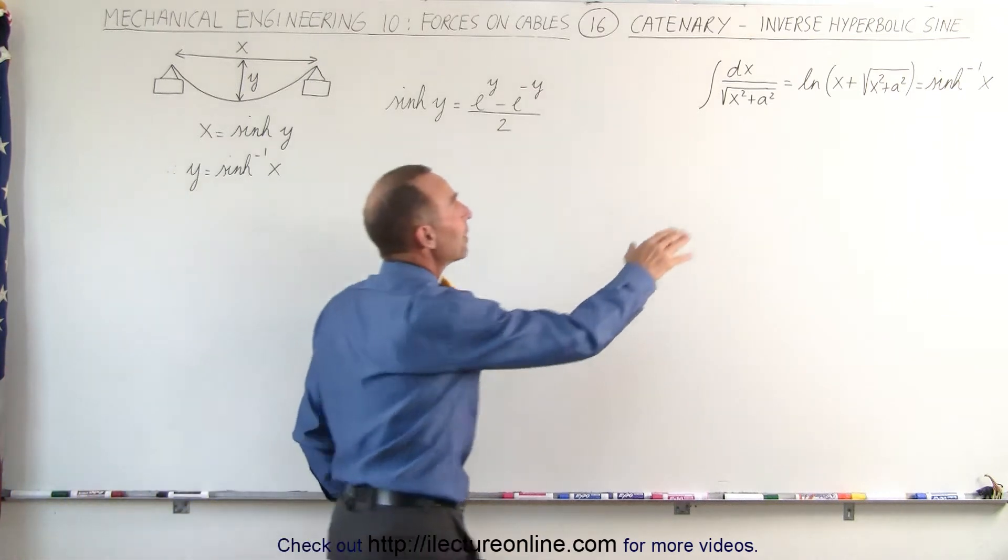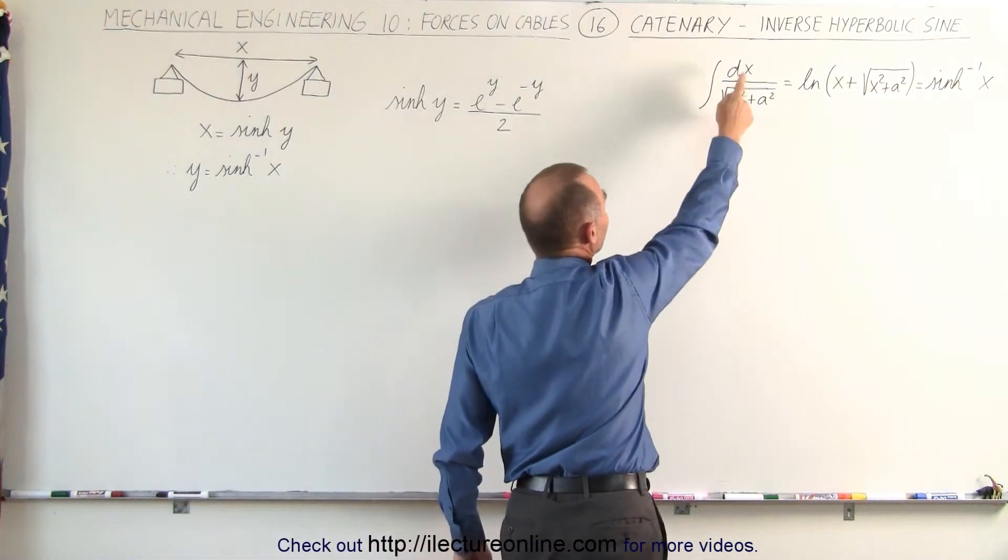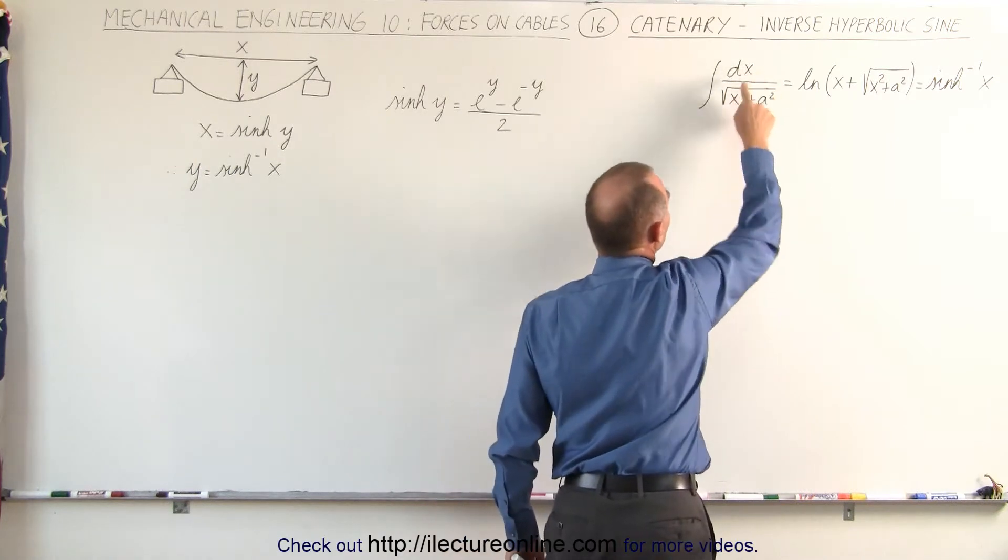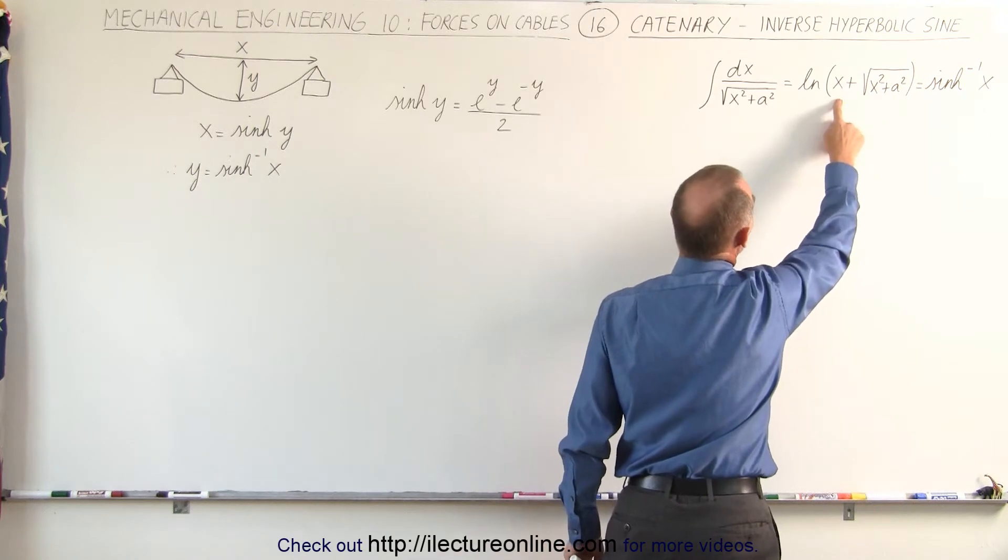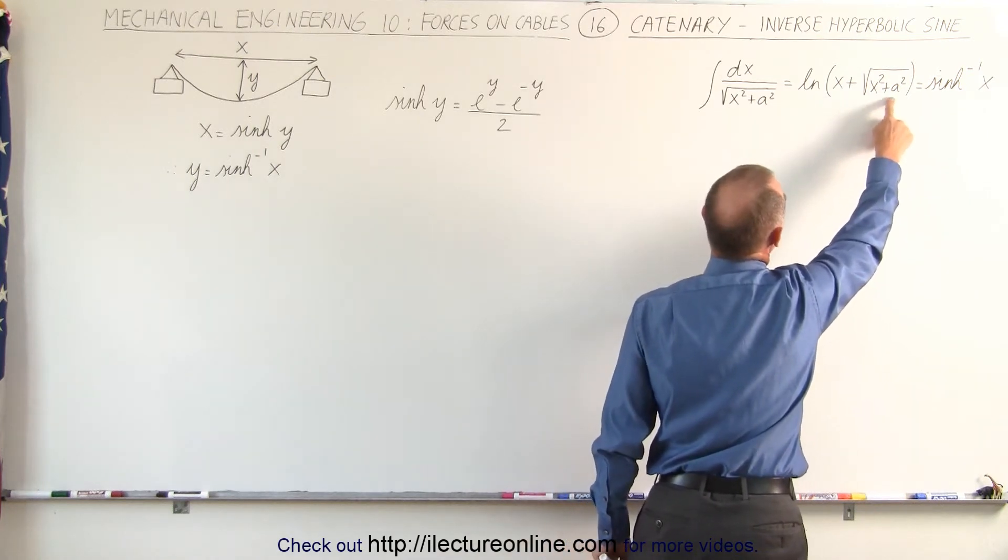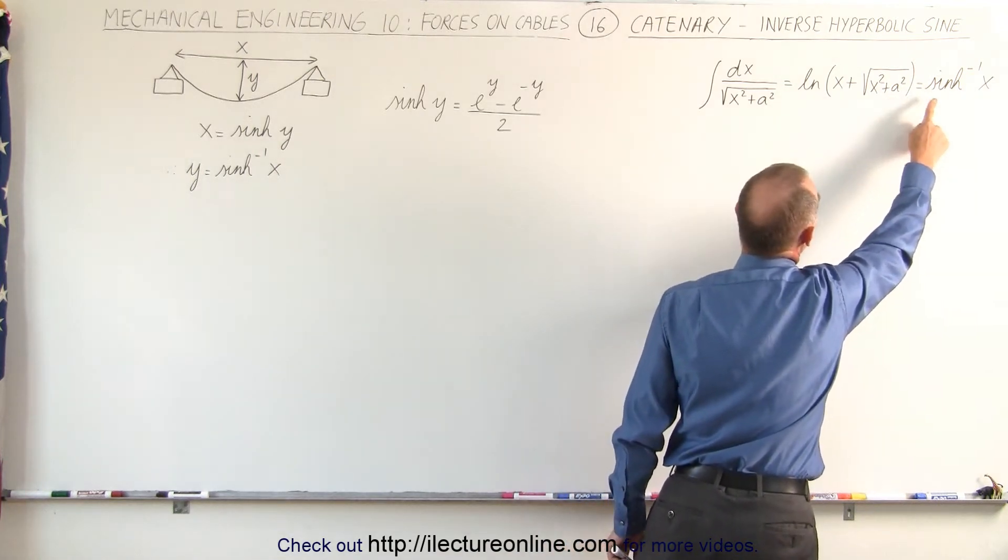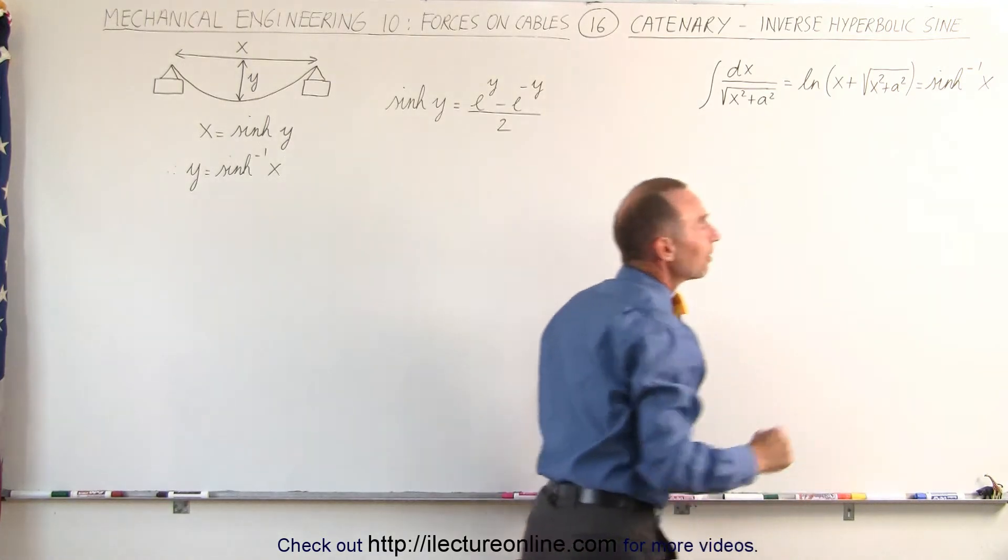We also need to become familiar with this integral. It turns out that the integral of dx divided by the square root of x squared plus a squared equals the natural log of x plus the square root of x squared plus a squared, which is equal to the inverse hyperbolic sine of x.